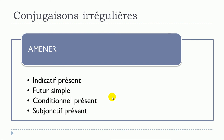For all the other tenses, the verb amener will just behave like a normal verb from the first group, following the same rules of construction. But for indicatif présent, futur simple, conditionnel présent, and subjonctif présent, little changes will happen — and that's exactly what we'll see in this video.